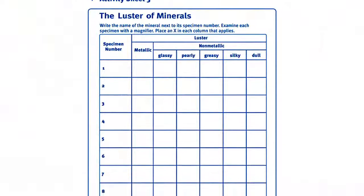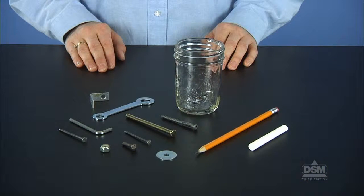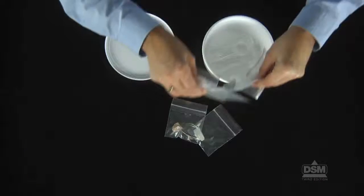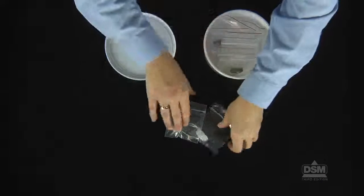To prepare for the activity, make a copy of Activity Sheet 3 for each student. Make sure to have the rock guide on hand for reference. You will need to collect the items to be used to illustrate metallic and non-metallic luster. For each group of four students, place two magnifiers and one set of mineral specimens 1-10 in a storage container.